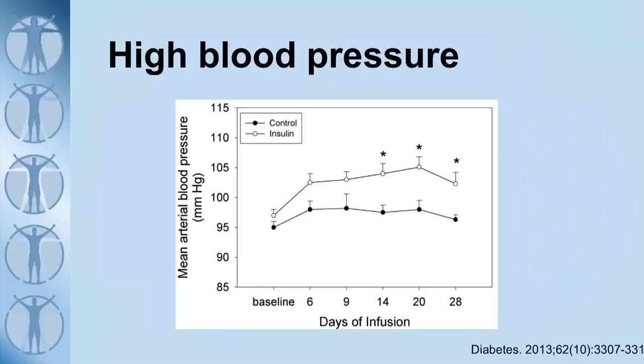Let's have a look at number two: elevated blood pressure. It's been clearly shown that elevated insulin levels correlate with increases in blood pressure. On this graph, the top line shows what happens if you give people insulin; the bottom line shows what happens if you don't. There's a clear causative mechanism of insulin in increasing blood pressure, and this is something we see every week in clinic. Once people start the low-carb diet, their insulin levels fall, and we have to reduce their blood pressure medications — otherwise they'll feel dizzy. So you control insulin levels, you can absolutely control blood pressure.